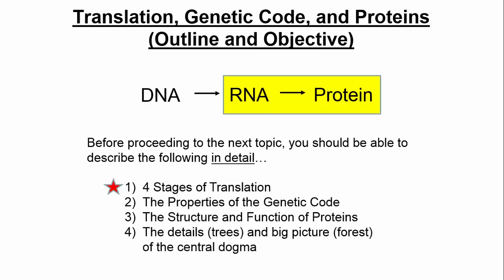In this lecture, we're going to focus on translation, specifically the four stages of translation. Translation is the second half of the central dogma. The first half is DNA being used as a template to make RNA — that process is called transcription. The second thing that happens is RNA is used as a template to make proteins, and that process is called translation.